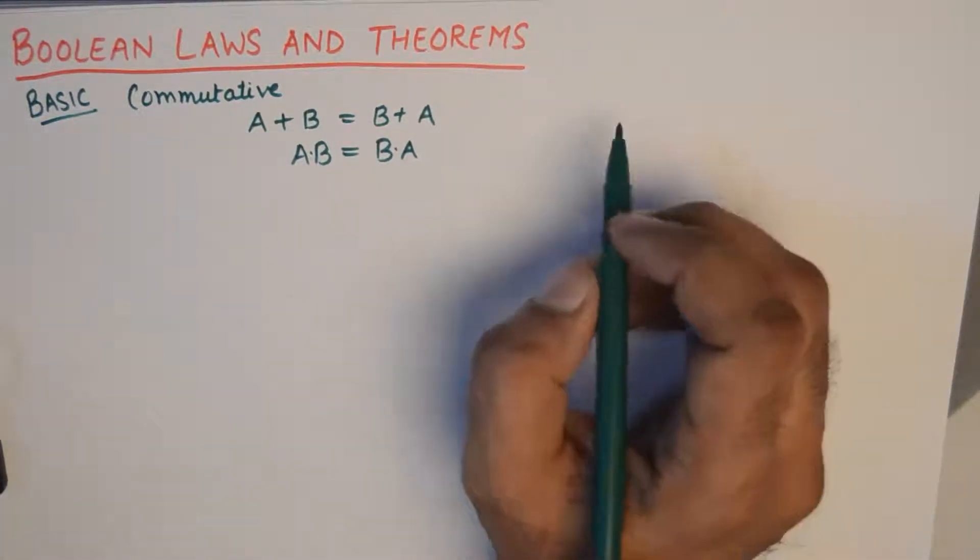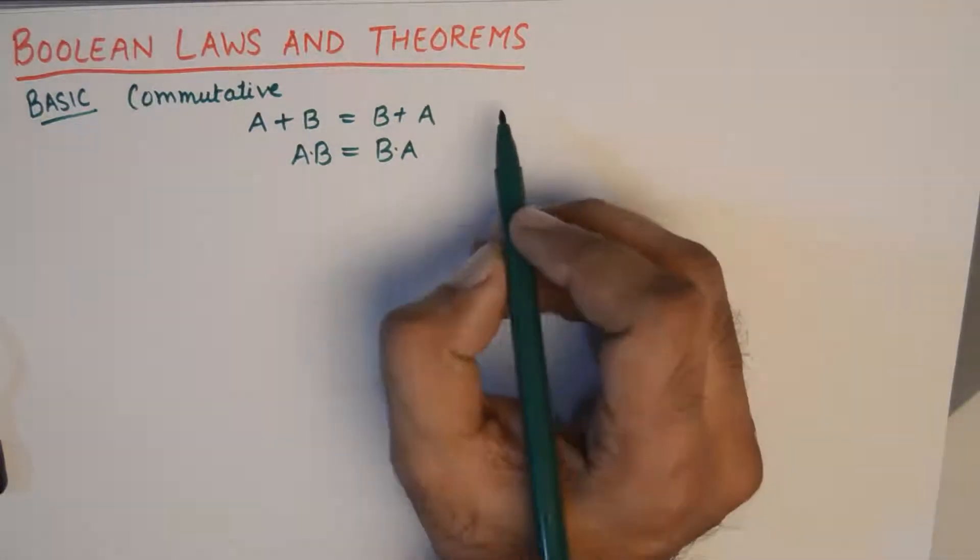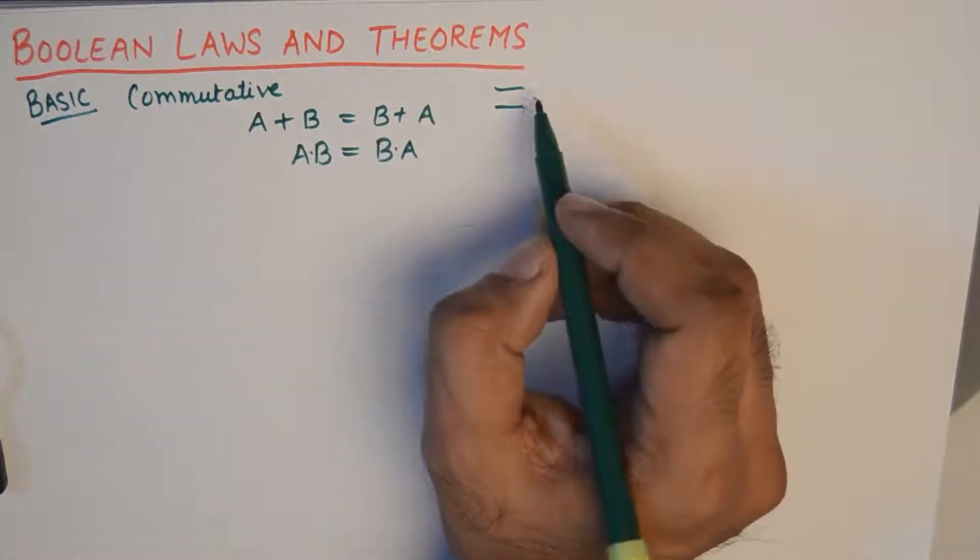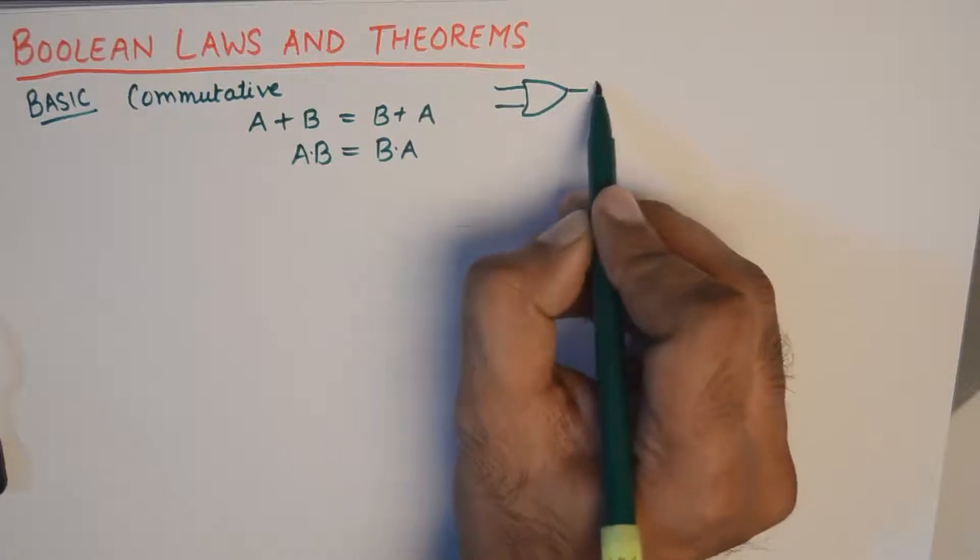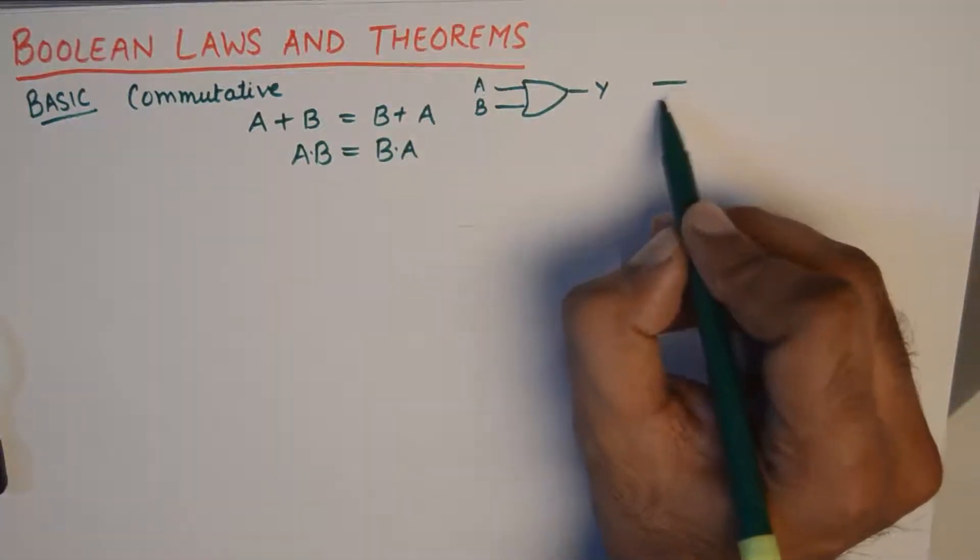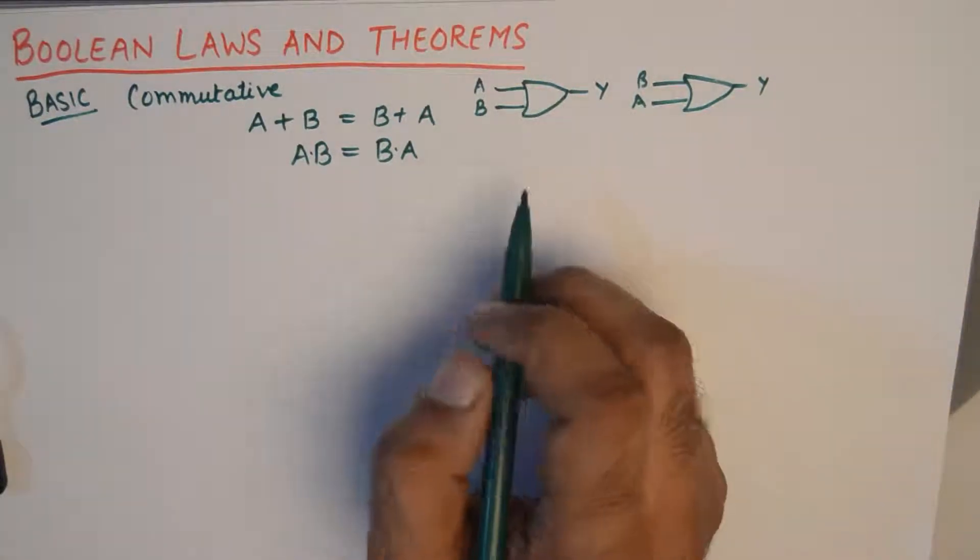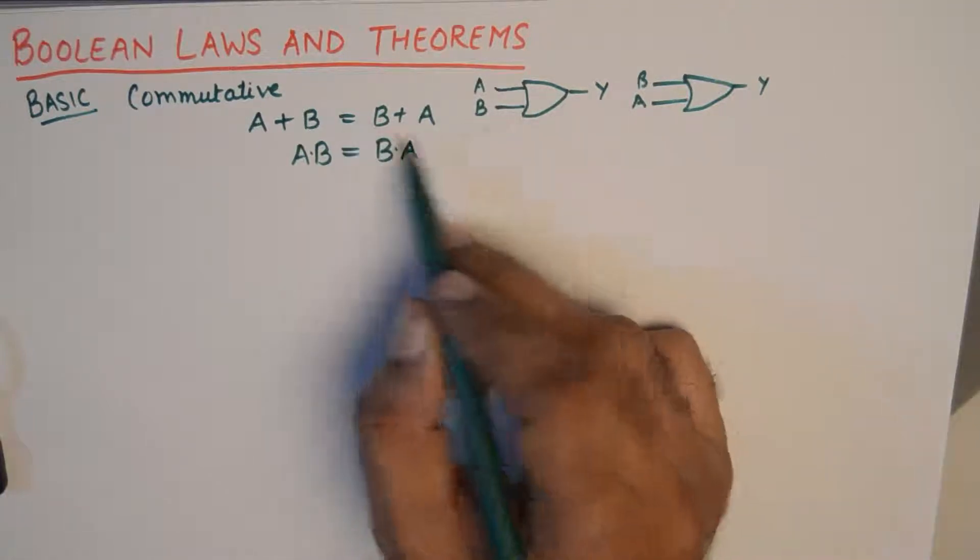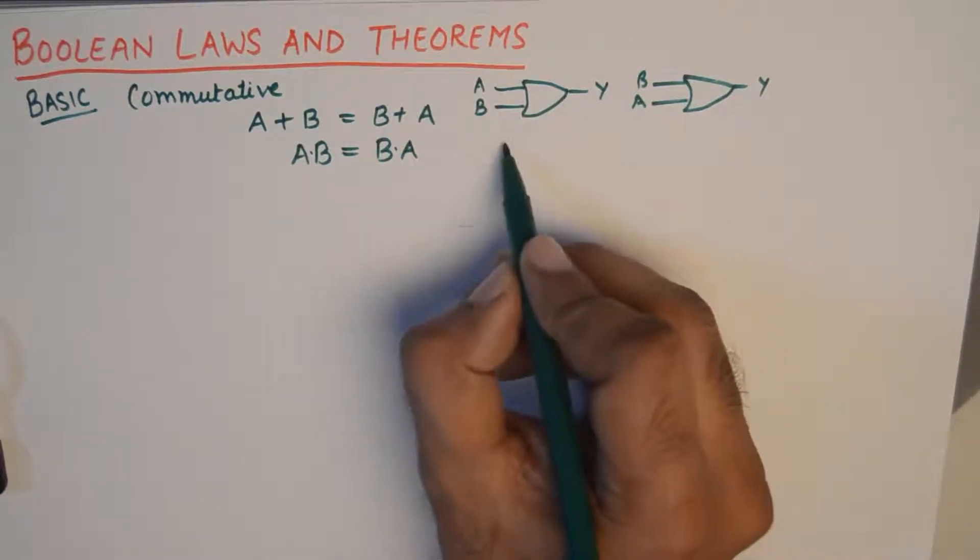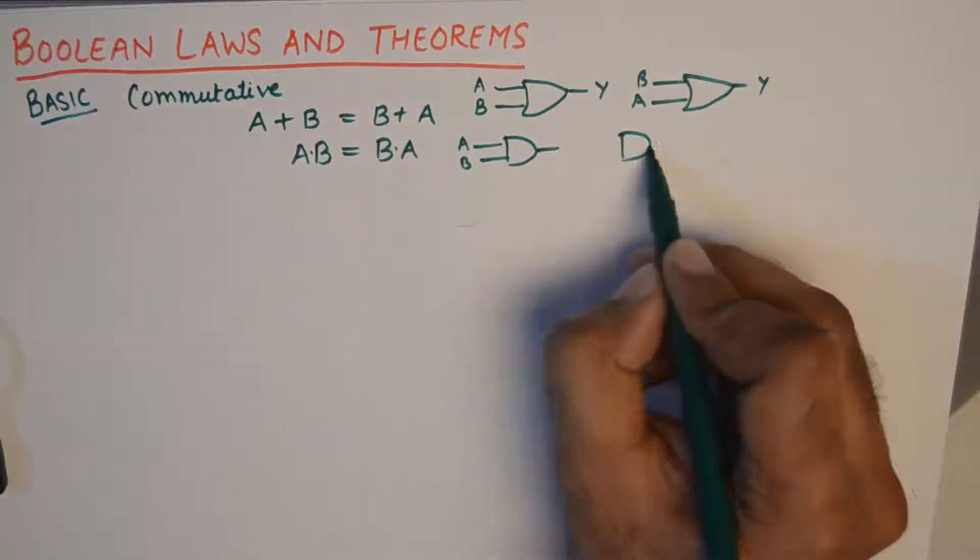And moreover if we draw the gate diagram it also does not make any difference. Because for the first equation it does not matter if we are using an OR gate to get an output by giving A on top and B at the bottom. So an equivalent diagram for this equation would be this, and this makes more sense. It does not matter if A is on the top or B is on the top. So these two things are equal.